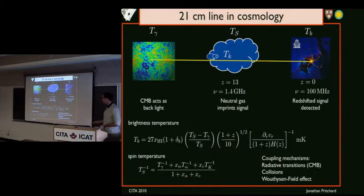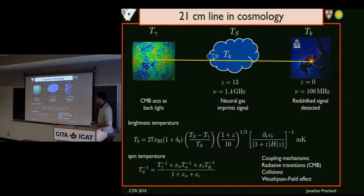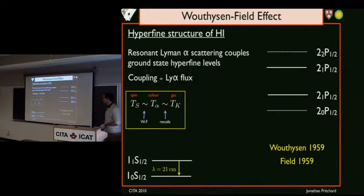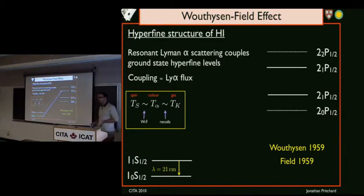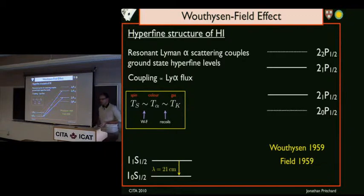The spin temperature is important and can be set by three different mechanisms. You can absorb photons from the tail of the CMB black body, which tends to equilibrate the spin and CMB temperatures — making the signal disappear. Collisions can drive the spin temperature to the gas temperature. And resonant scattering of Lyman-alpha photons can have the same effect. The idea is that you absorb a Lyman-alpha photon, get excited into the 2P state, and de-excite by going to the other hyperfine state, inducing a spin flip. This couples the spin temperature to the color temperature of the radiation field and via that to the gas temperature.